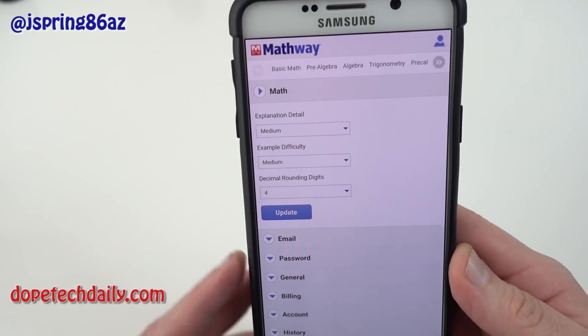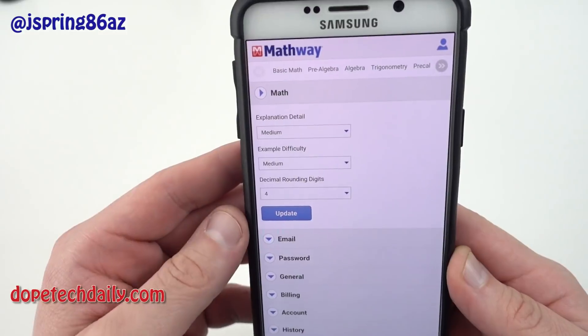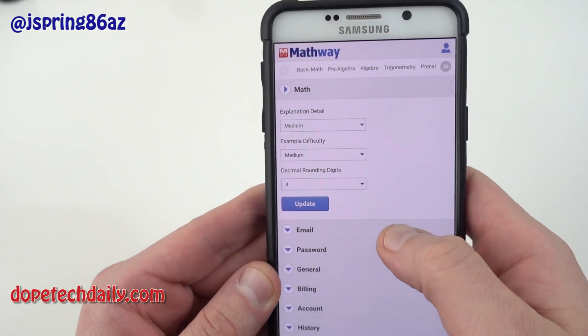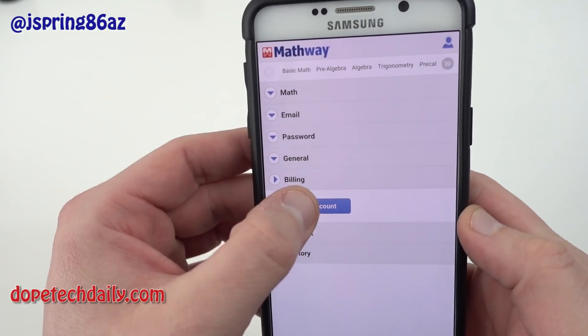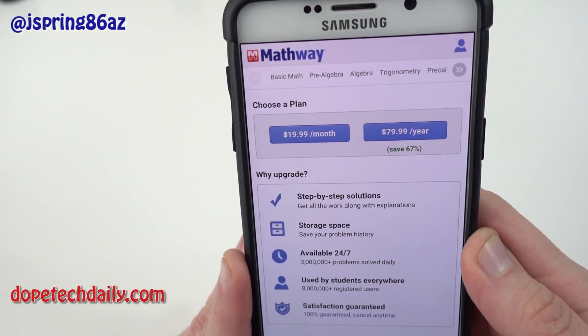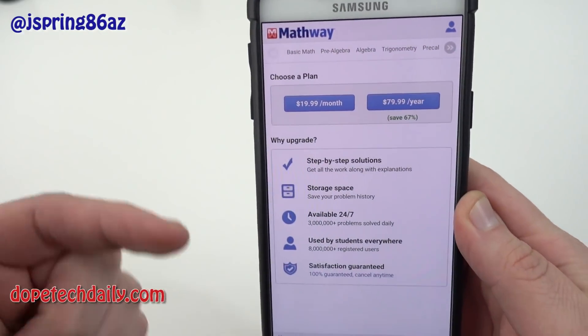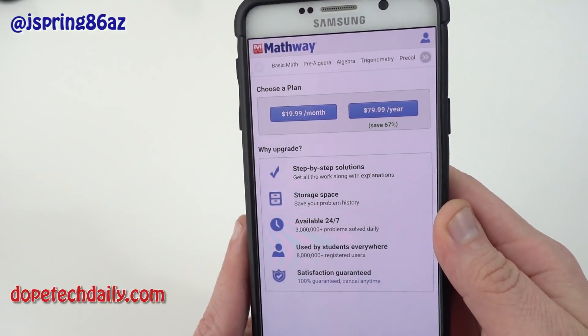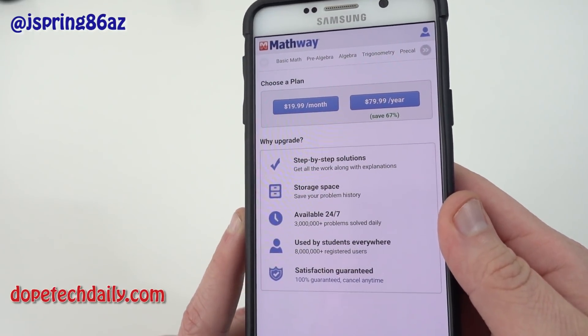The other thing you can do if you want is you can change these detail and example difficulties if you have the premium version. So I'm not sponsored by Mathway or anything at all but I'll show you really quick. If you want you can sign up for $19.99 a month, $79.99 a year and you get step-by-step solutions for everything.